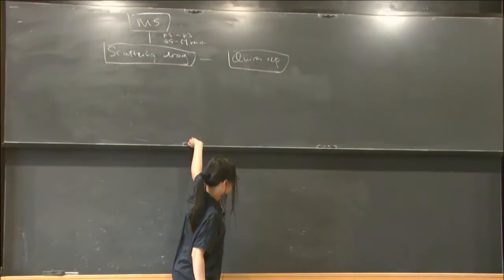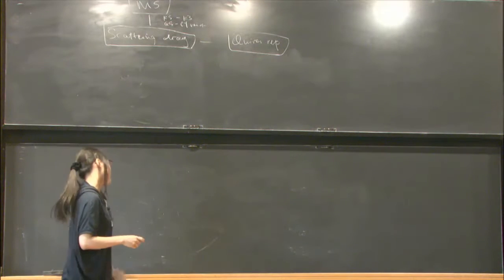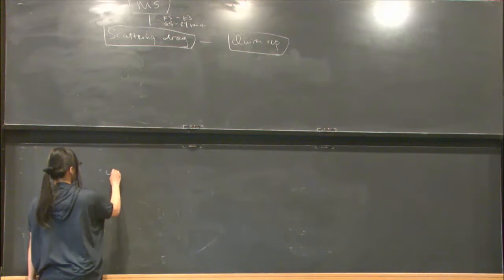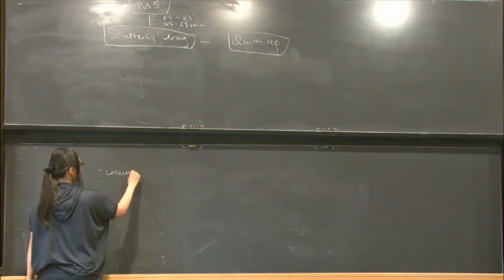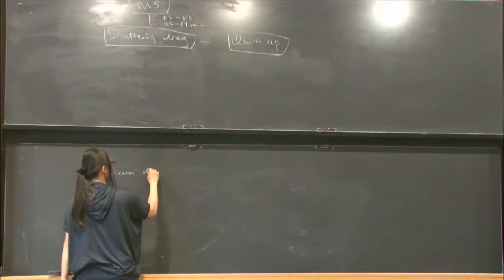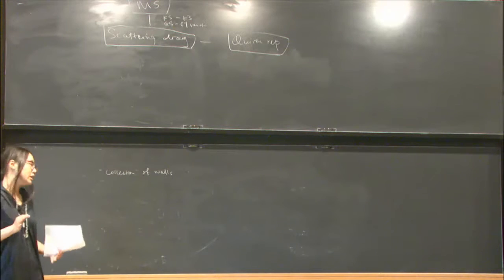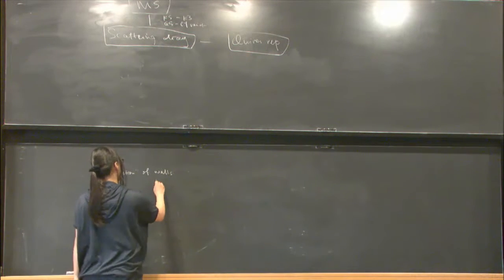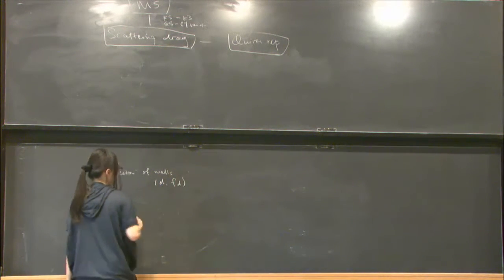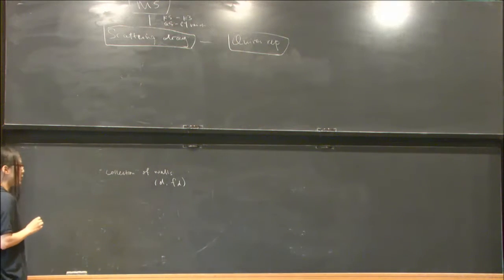So what is a scattering diagram? A scattering diagram is somehow a collection of walls. Instead of assuming an embedding, we have the geometric wall, but I also have a function that is attached to this wall as well.